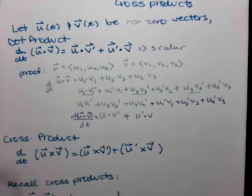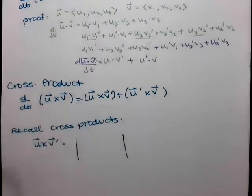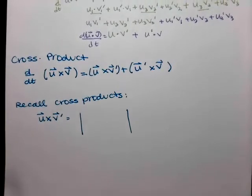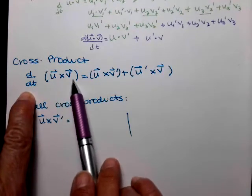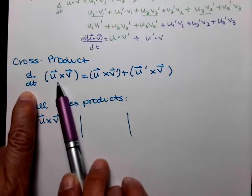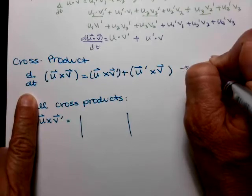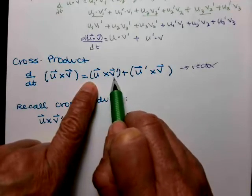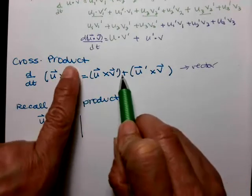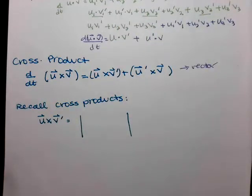Now the cross product. I am not going to do this proof because the cross product proof takes a lot with all those subscripts and primes. The derivative with respect to t of u cross v — remember, u cross v leads to a vector, so the derivative also leads to a vector — is u cross v prime plus u prime cross v. Order matters; you can't swap these around. It's more forgiving with dot product because dot product is commutative, but cross product isn't.